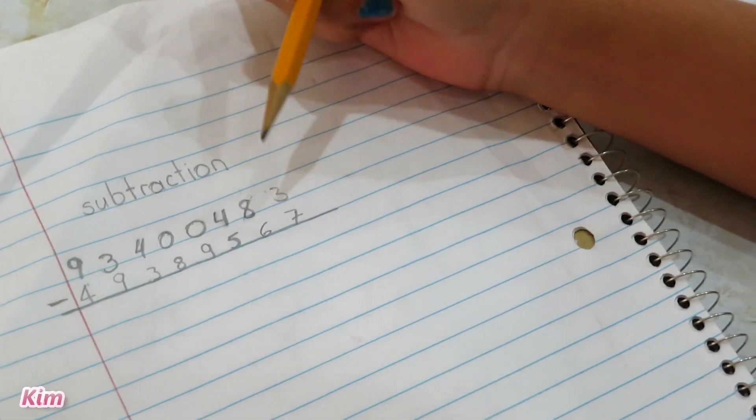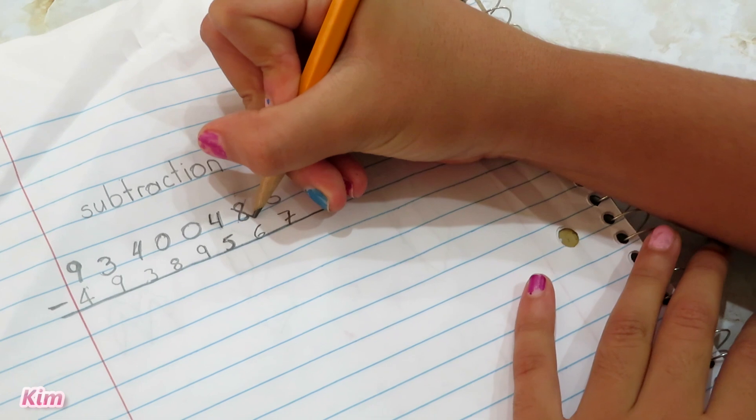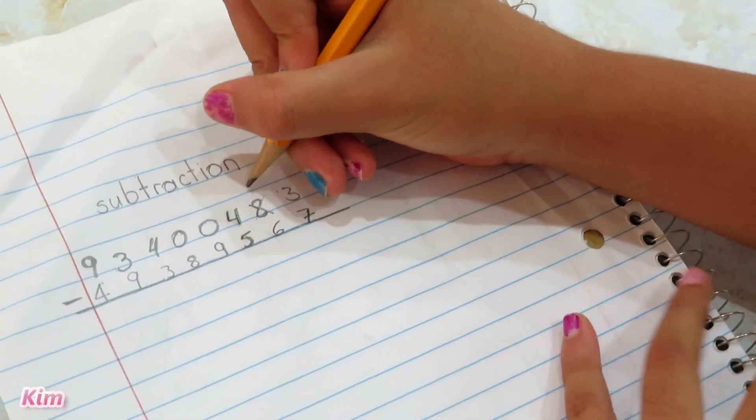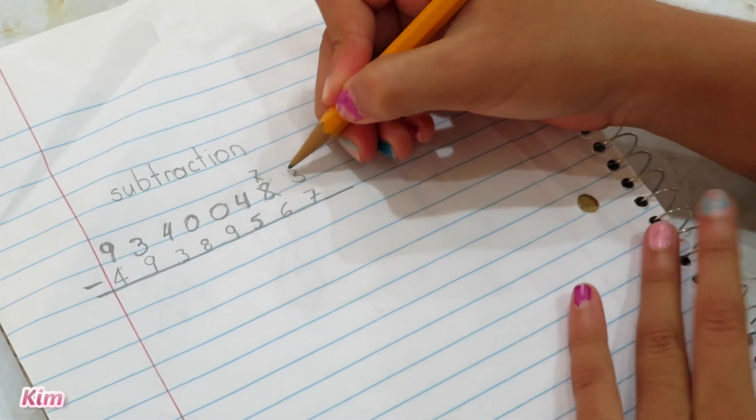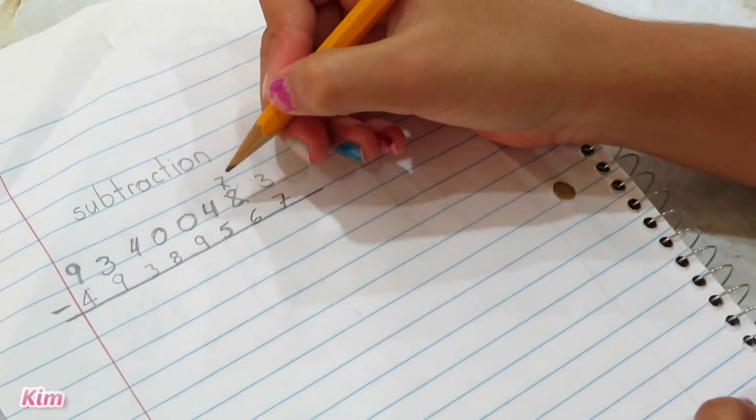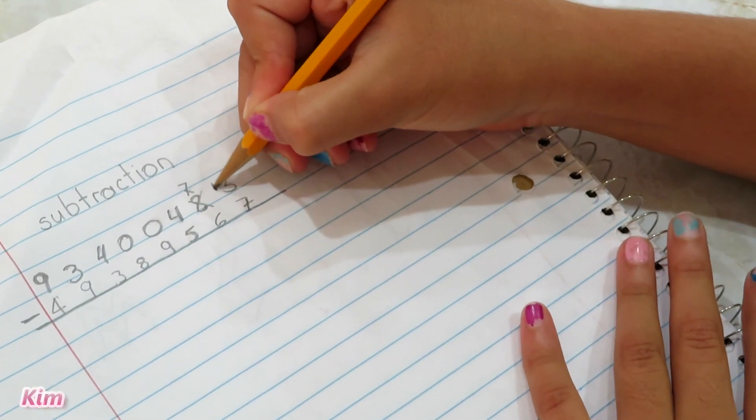So we have to borrow from 8. We take 1 away from 8, so we cross it out and it turns into a 7. Now this one gets the one that we borrowed from the 8, so we put one right here.